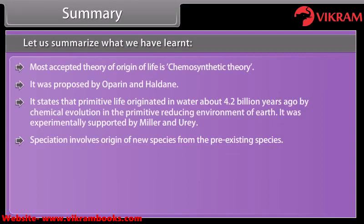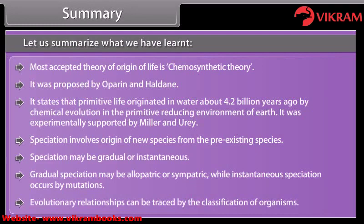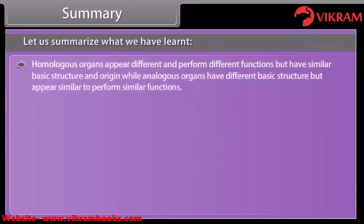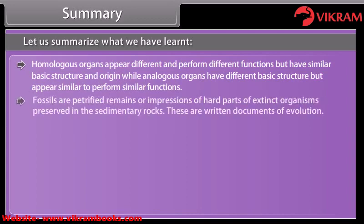Speciation involves the origin of new species from pre-existing species, and may be gradual or instantaneous. Gradual speciation may be allopatric or sympatric, while instantaneous speciation occurs by mutations. Evolutionary relationships can be traced by the classification of organisms. Homologous organs appear different and perform different functions but have similar basic structure and origin, while analogous organs have different basic structure but appear similar and perform similar functions. Fossils are petrified remains or impressions of hard parts of extinct organisms preserved in sedimentary rocks — they are written documents of evolution.